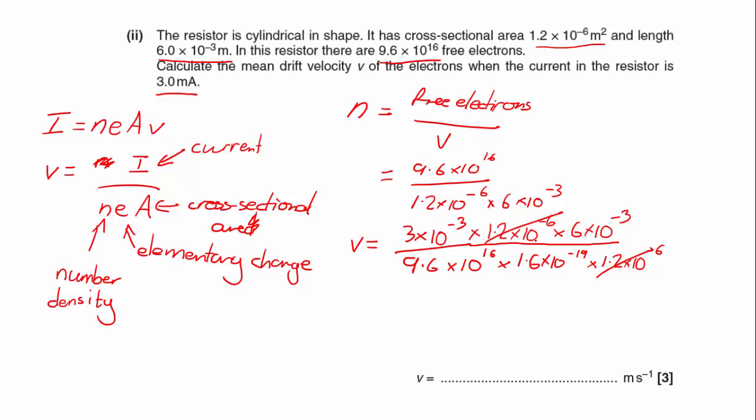And if I put that into my calculator, I get an answer of 1.171 times 10 to the minus 3. So putting it into two significant figures, because all my things are given to two significant figures, let's go with 1.2 times 10 to the minus 3 meters per second.